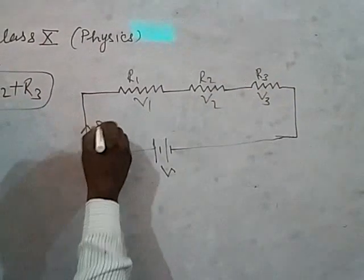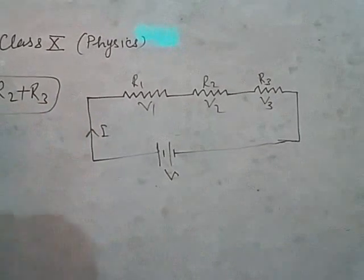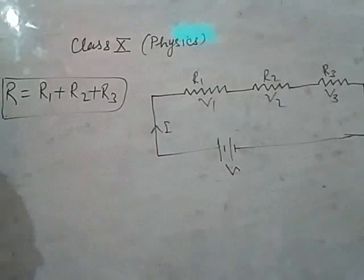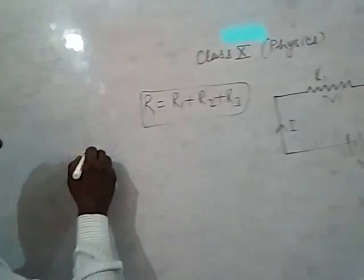I have told you that in this combination, current is same in every resistor. Number one, current is same in every resistor.